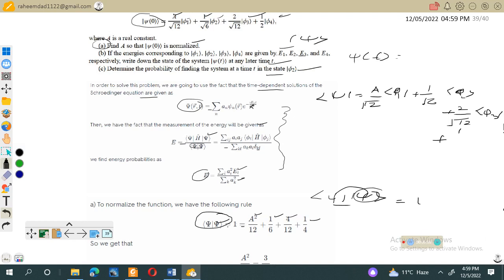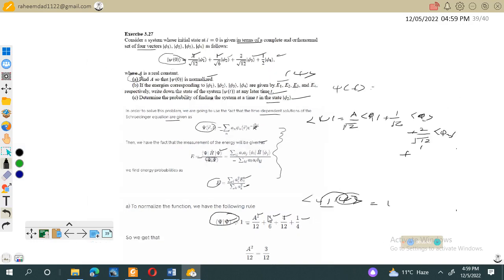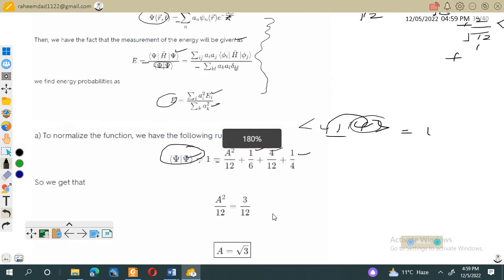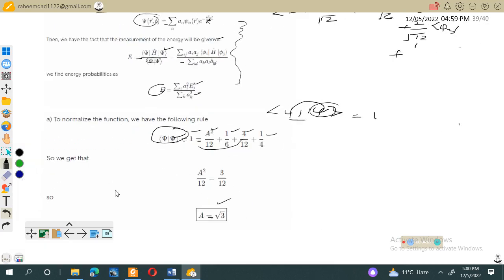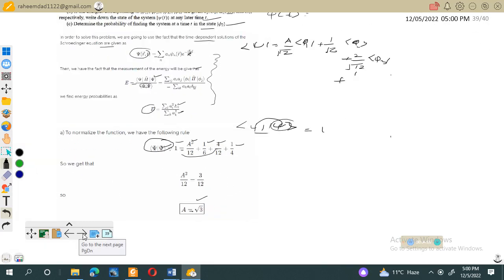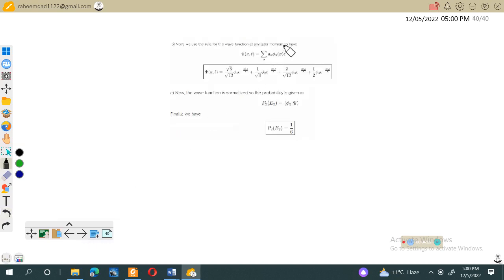When we multiply ψ with its complex conjugate, it will give this value, so we can find from this the value of a. Because on the left side we have constant 1, this constant will go on the other side, so a will be equal to √3. This is our normalization constant, which was the requirement of the first part of this equation.